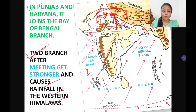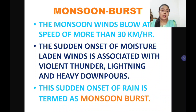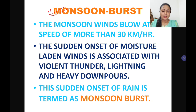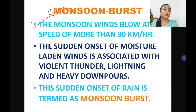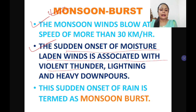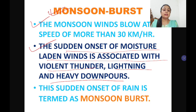Before learning about the Bay of Bengal branch, there is an important term: monsoon burst. This simply means the sudden rainfall during monsoon onset. The monsoon winds blow at a speed of more than 30 kilometers per hour, and the sudden onset of moisture-laden winds is associated with violent thunder, lightning, and very heavy downpours. This is known as monsoon burst — it's a sudden change of conditions from the very hot weather season to the rainy season.